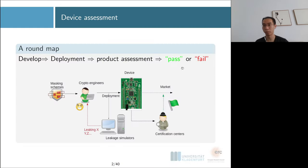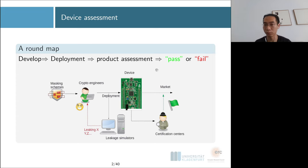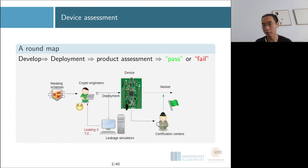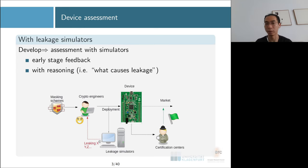We already talked about leakage simulators in my last talk. Leakage simulators are early-stage feedback tools that help developers avoid using real side-channel measurements or waiting for certification centers. After finishing their code, developers can check whether the implementation is okay, and the simulator will also tell you exactly what caused a problem and how to fix it.